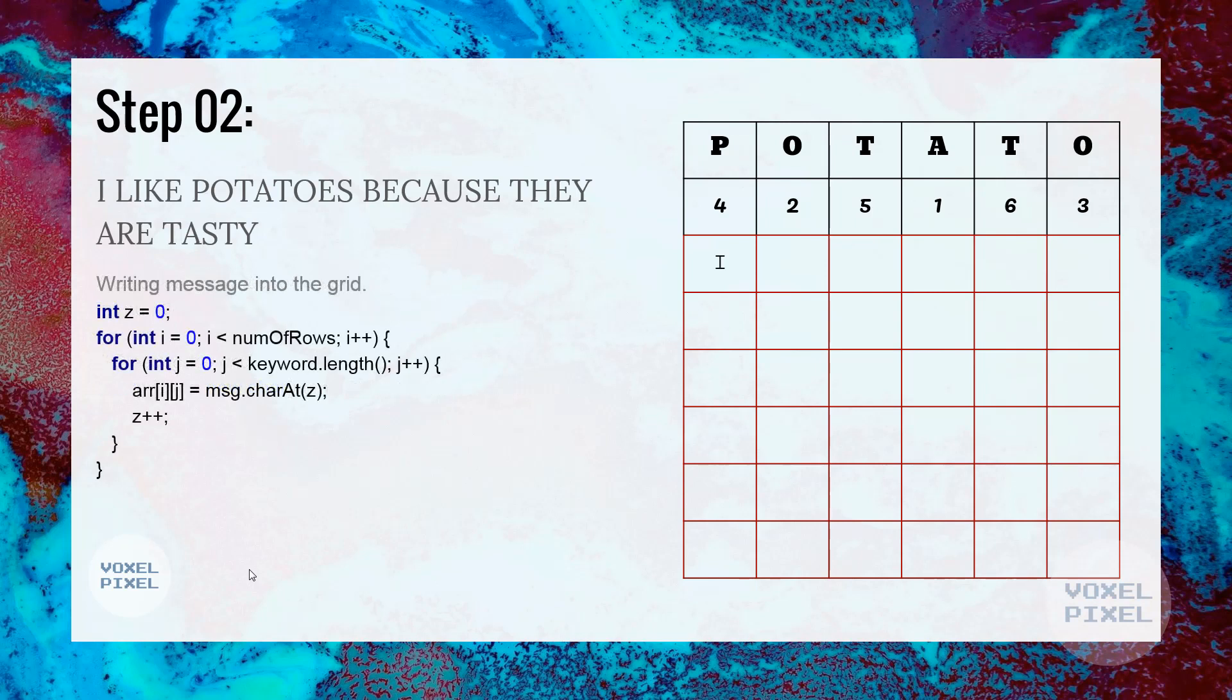Next, we will write our plain text into the grid letter by letter. Since first letter is the I, we will put it first, then followed by L, then I, then K, and then E. We will keep on adding our entire plain text message into the grid letter by letter until entire grid is filled. As you can see, there are still empty places inside the grid. So, we will add dummy characters.